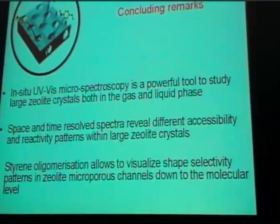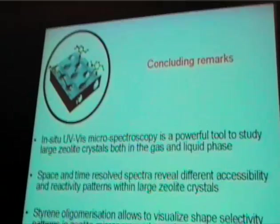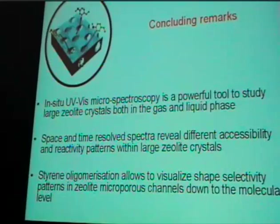To conclude, I hope I have shown you that UV-Vis microspectroscopy is a powerful tool to study large zeolite crystals of micron size, both in the gas and liquid phase. The space- and time-resolved spectra reveal different accessibility and reactivity patterns within these large zeolite crystals, and also allow you to study micro- and mesoporosity. The styrene oligomerization reaction is a very elegant reaction because its colors and color changes, and the possibility to monitor certain bands as a function of temperature and time, allow you to visualize shape selectivity in zeolite micropore channels.